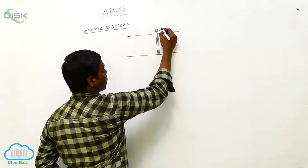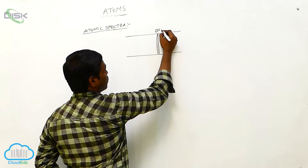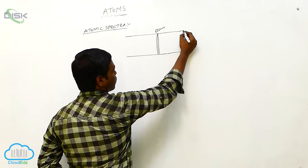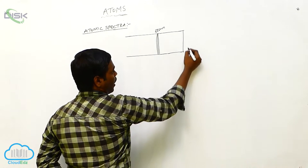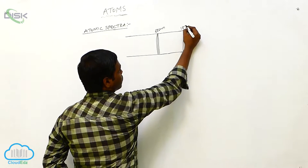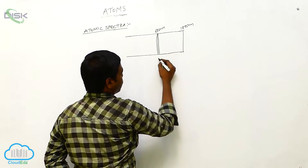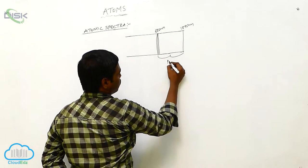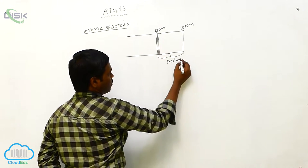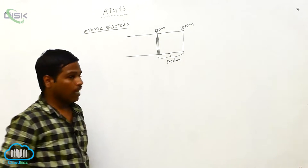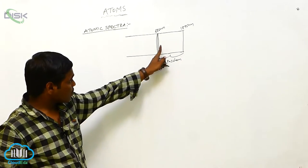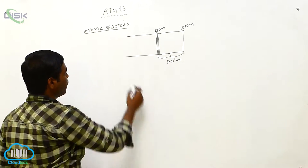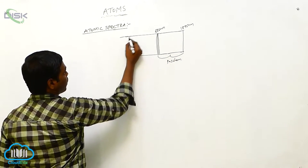For example, in the absorption spectra, one line is at 686 nanometers and another is at 1875 nanometers. This is the Paschen series, and these are the limits for the Paschen series.